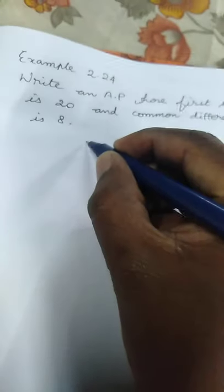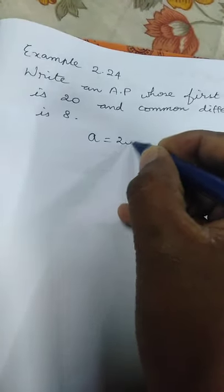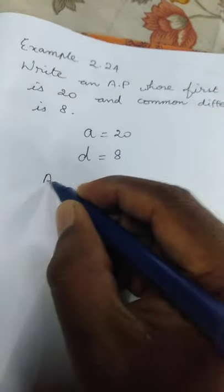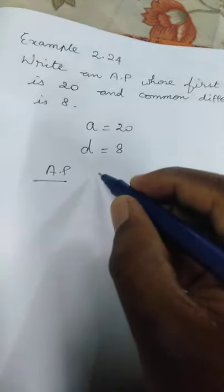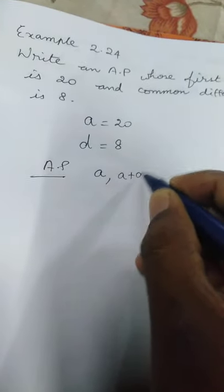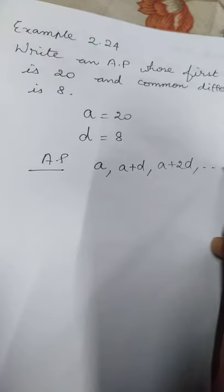First term A is equal to 20, common difference D is equal to 8. AP general format is A, A plus D, A plus 2D, etc.